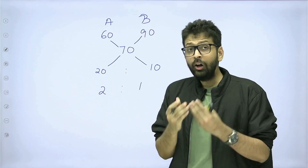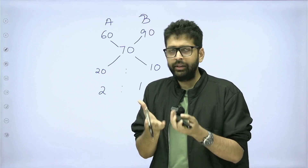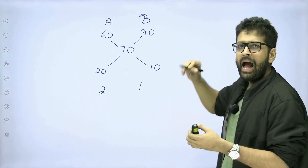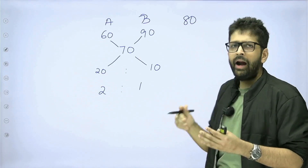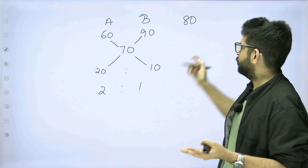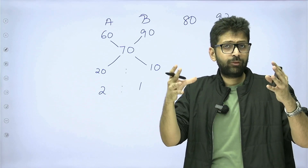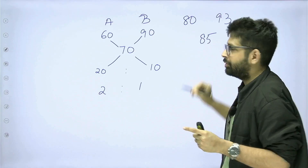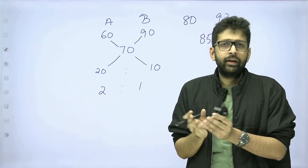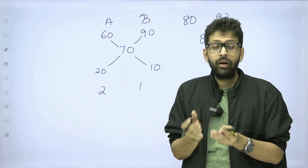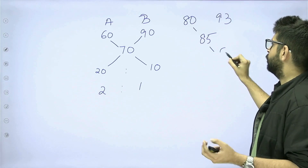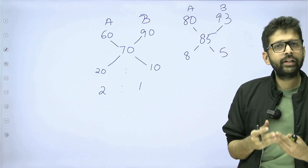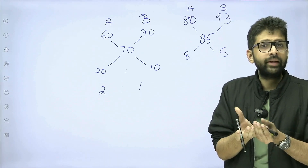Where would this be used? In a lot of questions on averages. For example, there are two classrooms. In classroom A, the average score was 80 marks, and in classroom B, the average score was 93 marks. Overall, combining both classrooms, the average score was 85 marks. What was the ratio of the number of students in classroom A and classroom B? Using allegation: 85 − 80 = 5 and 93 − 85 = 8. So classroom A and classroom B have their students in the ratio 8 is to 5 — solved in 20 to 30 seconds.